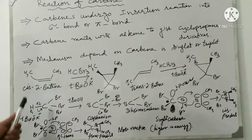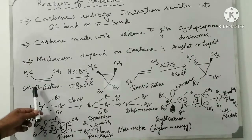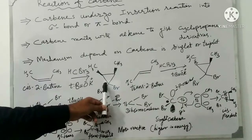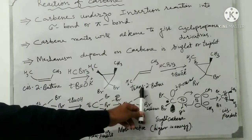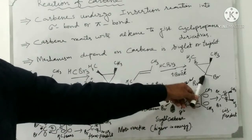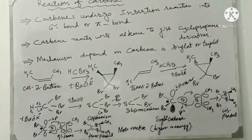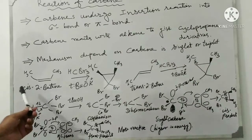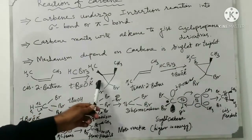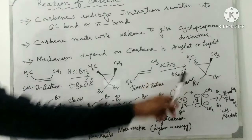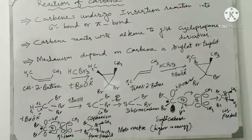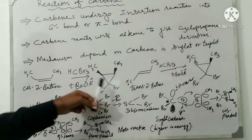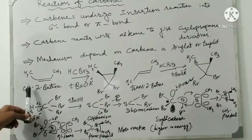So cis-2-butene gives cis-cyclopropane derivative, and trans-2-butene gives trans-cyclopropane derivative. This reaction is called stereospecific — when the reactant is cis it gives the cis product, and trans gives the trans product. Stereospecific means the stereochemistry of the product is dictated by the stereochemistry of the reactant.